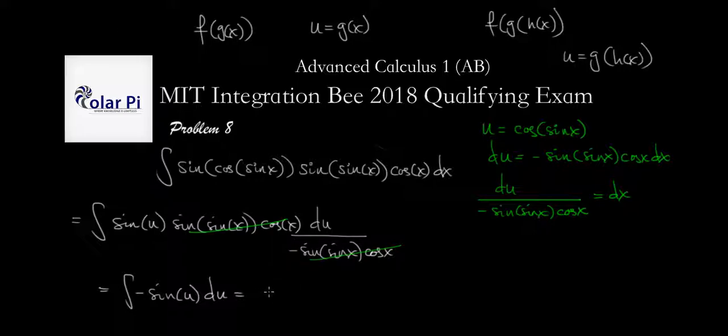So, now we have cosine u plus c. But then u was this. So, the answer is cosine of cosine of sine of x. One more point, c, plus c. Yeah? Okay, cool, cool, cool.